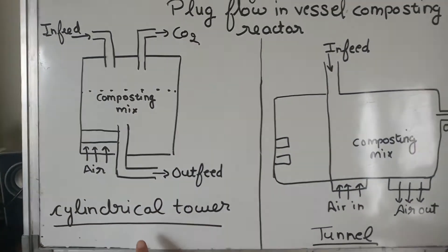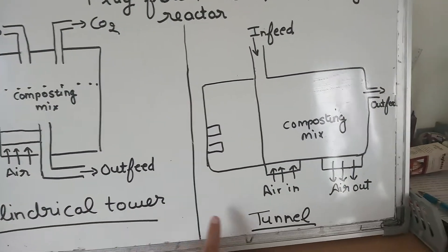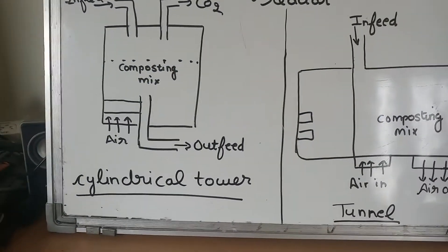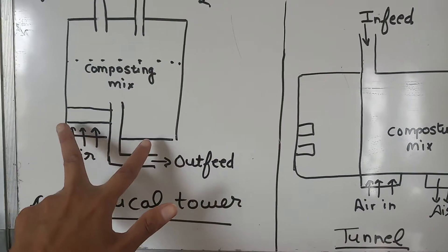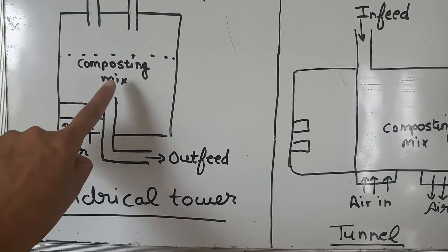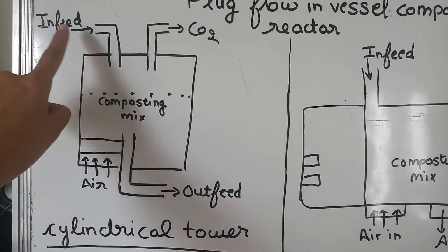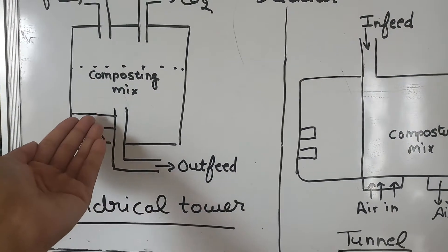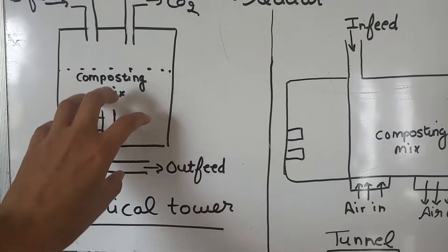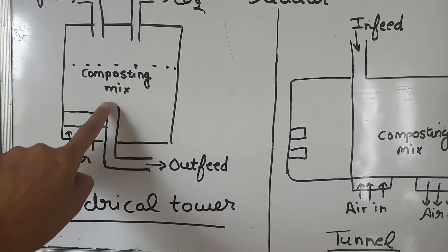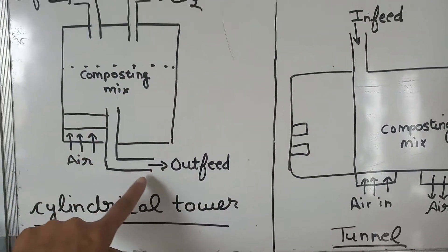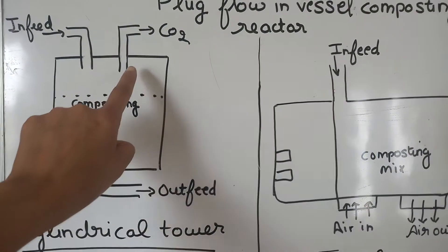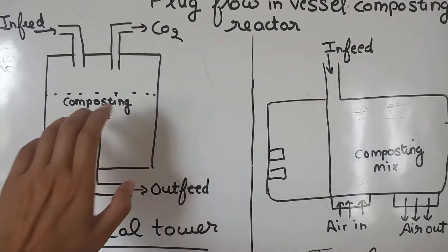In the cylindrical type, the shape is cylindrical and the composting mixture goes in through an in-feed. Air is supplied into the mixture. The out-feed delivers the treated, composted material, and carbon dioxide released during the process exits from there.